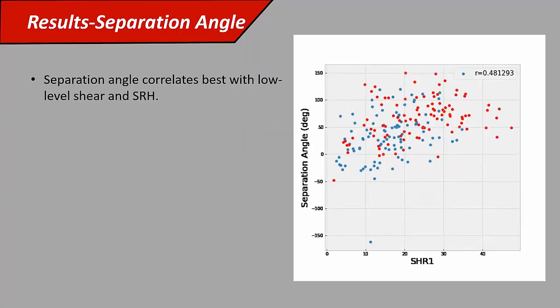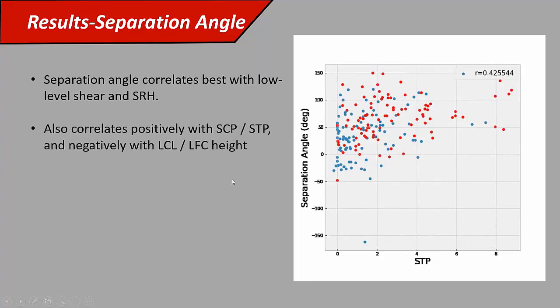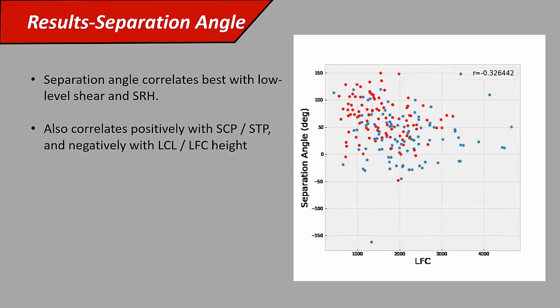Separation angle, as expected, correlated best with low-level shear. This is surface to one kilometer shear here, and you can see that generally you've got larger separation angles with your stronger low-level shear. Same with SRH, larger separation angles with stronger SRH. It also correlated positively with supercell composite and significant tornado parameter, and negatively with some of the thermodynamic parameters, LCL and LFC.